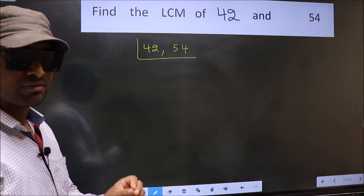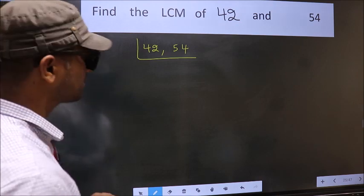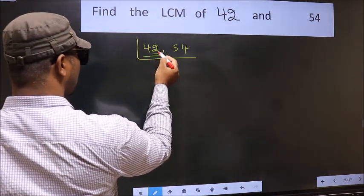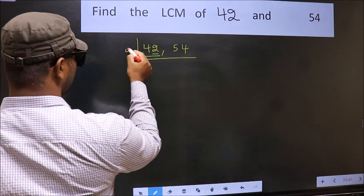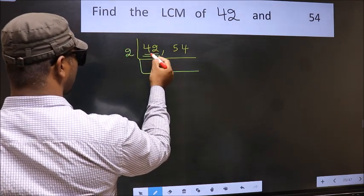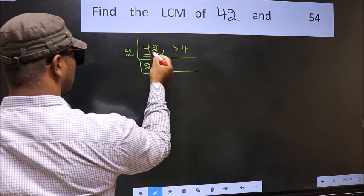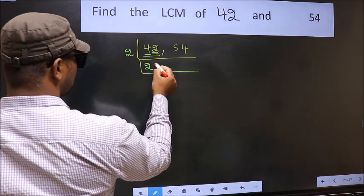Now you should focus on the first number which is 42 here. For this number, last digit 2, even, so take 2. First number 4, when do we get 4 in 2 table? 2 times 2 is 4. The other number 2, when do we get 2 in 2 table? 2 times 1 is 2.